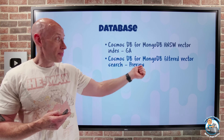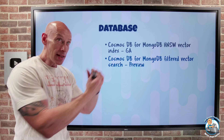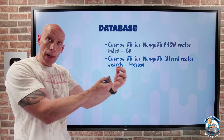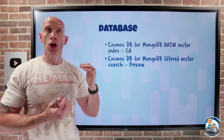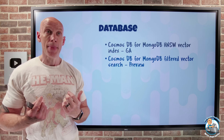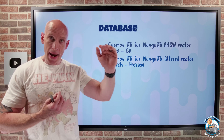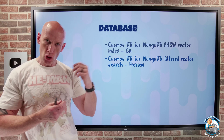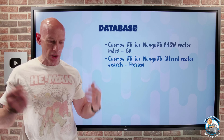Cosmos DB for MongoDB also now has filtered vector search. Instead of doing that vector search against all of the data, think of this filtering as a pre-filter before it does the vector search. For example, I have a column that might be location, so I could say the location has to match Idaho. Then for the documents that match Idaho, it performs the vector search. This can significantly cut down the amount of documents it has to do that comparison against, which speeds things up and uses fewer resources.